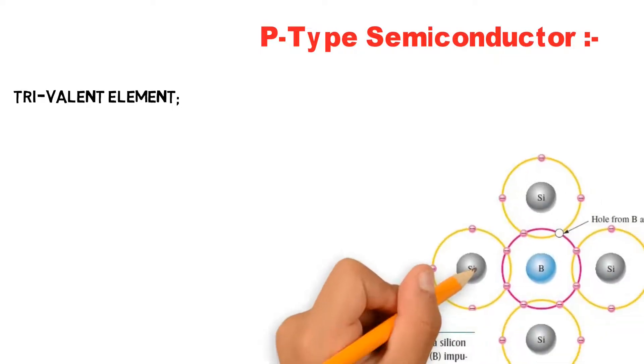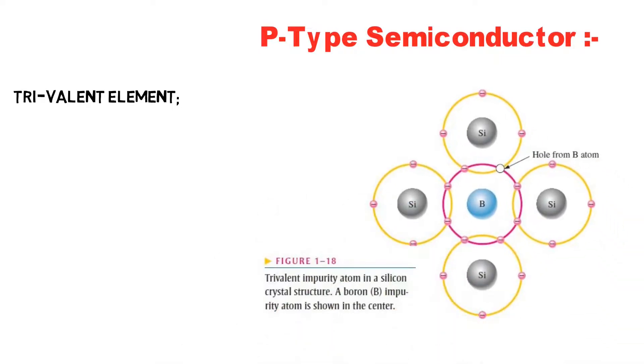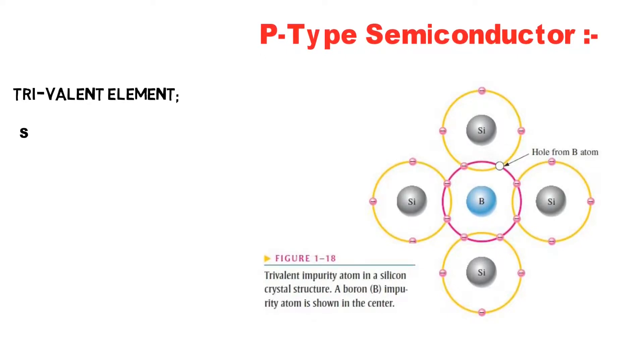Similarly to make a p-type semiconductor, trivalent impurity atoms are added. These are atoms with three valence electrons such as boron, indium and gallium. As illustrated in figure, a trivalent atom of boron forms covalent bonds with four adjacent silicon atoms.